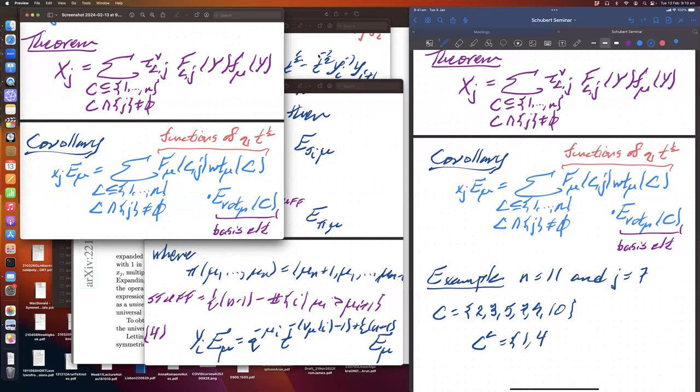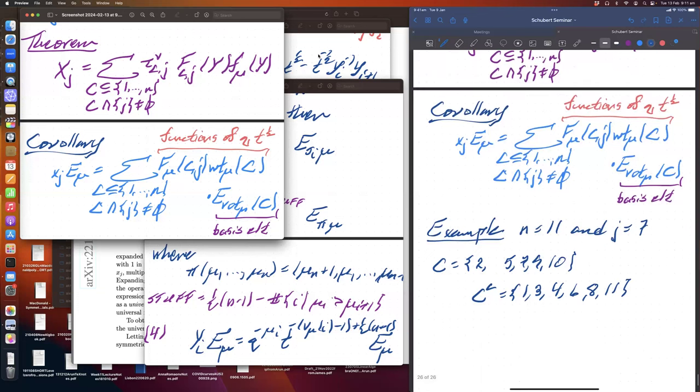All right. So let's copy these, because we're going to have to refer to these a lot here. So I can explain the combinatorics. So let me explain how I think about this. We'll just do an example. So I'm going to do n is 11, and j is 7. And so one term in this sum depends on a subset of 1 through 11. So I'm going to choose for my subset 2, 5, 7, 9, and 10. And very important is going to be the complement of that subset, which in this case is 1, 3, 4, 6, 8, and 11.